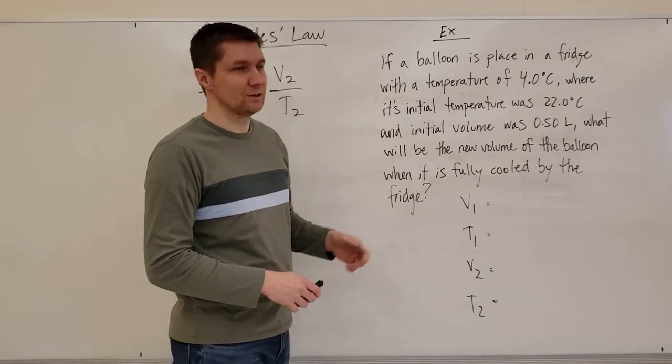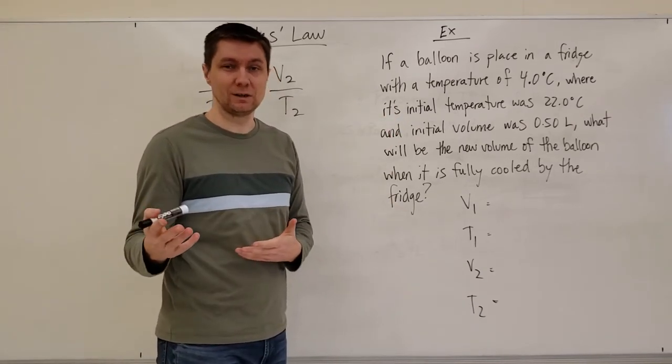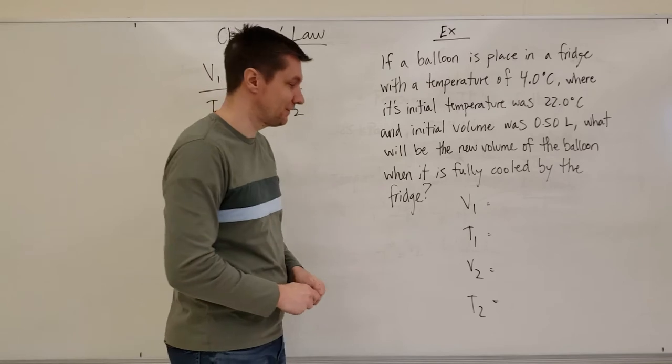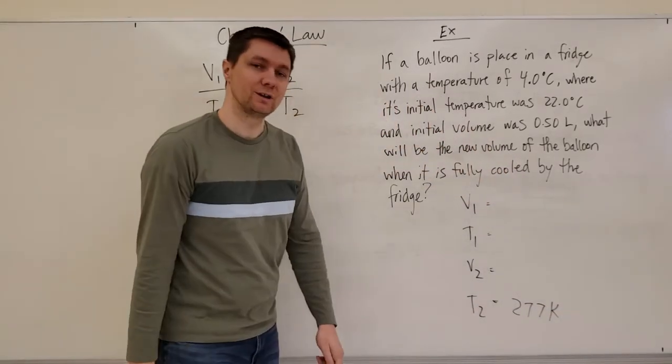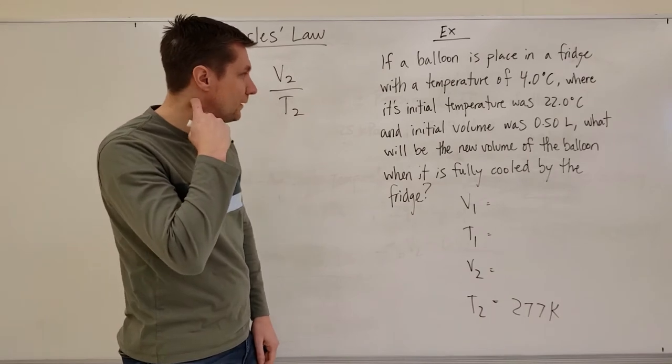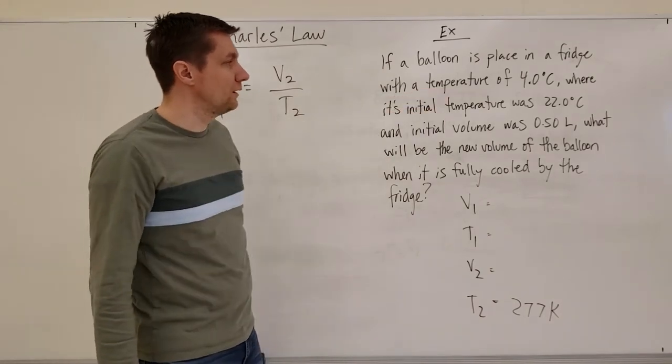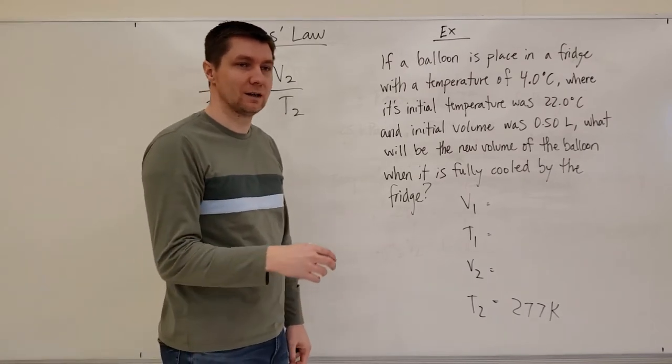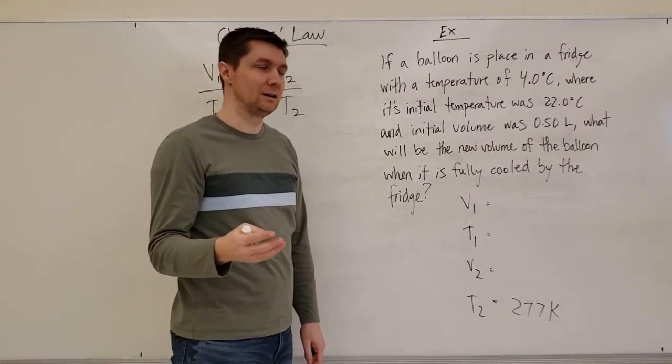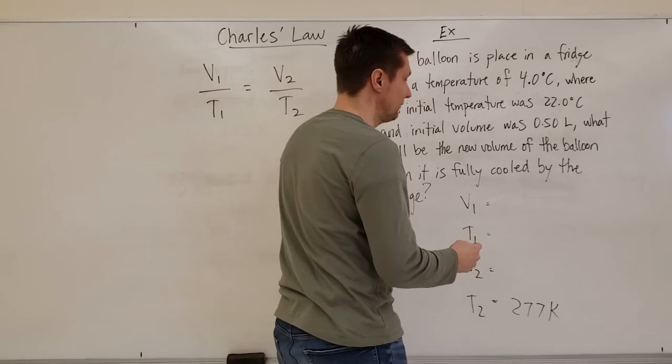So 4 degrees Celsius added to 273, that's going to be 277. So this is my temperature in Kelvin T2. My T1 is 22 degrees Celsius add that to 273, that's going to give me 295.